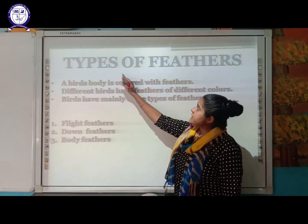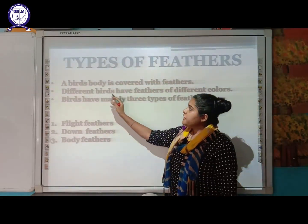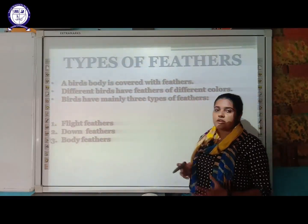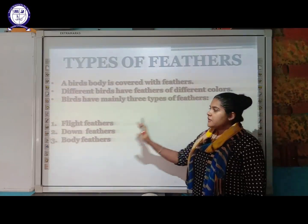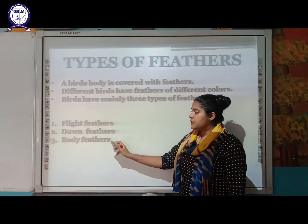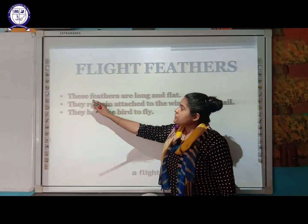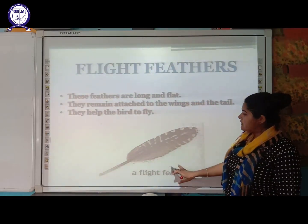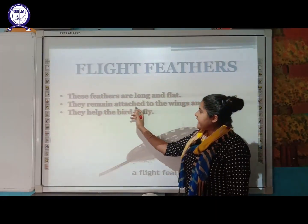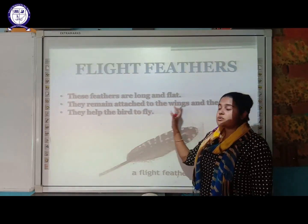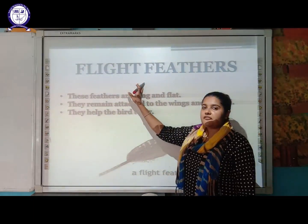Next, the types of feathers. The body of the bird is covered with feathers of different colors and types. There are mainly three types: flight feathers, down feathers, and body feathers. Flight feathers are long and flat, attached to the wings and tail, which is why they help the bird to fly.